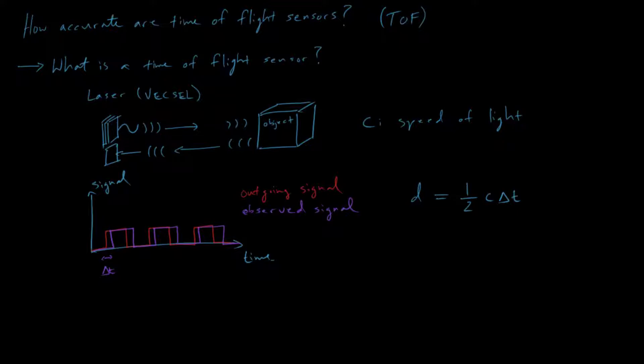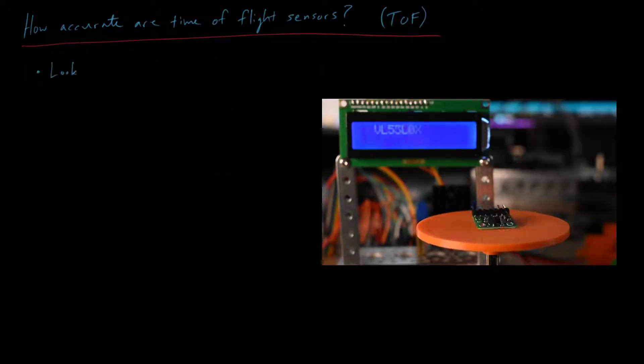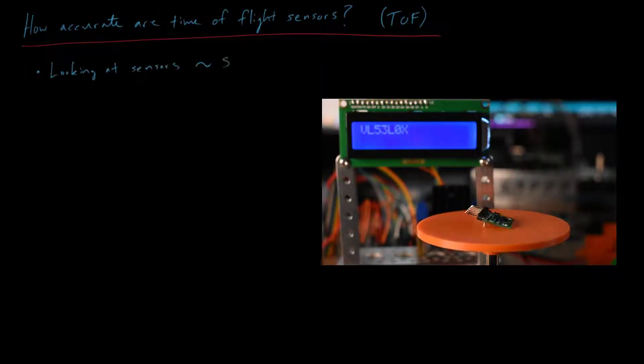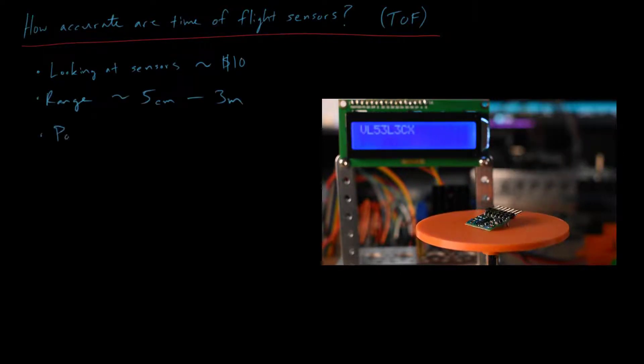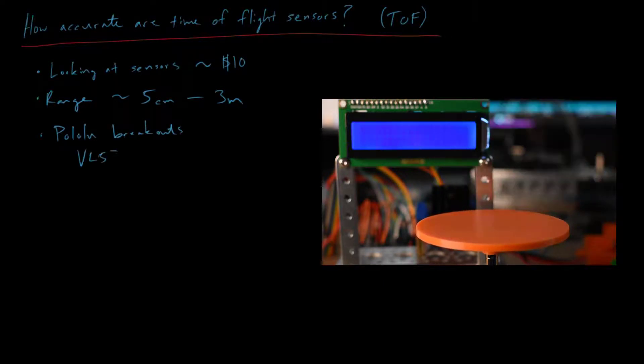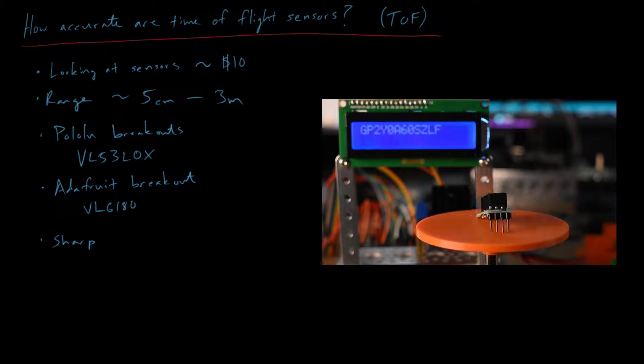So I want to get back to this question of how accurate are these time-of-flight sensors? So I'm going to be looking at these inexpensive breakout boards. They're around $10. And typically, these have a range of between 5 centimeters and 3 meters. I want to look at some Pololu breakouts, like this VL53L0X. There's a sharp sensor. This is, I think, an older sensor. And I'm also going to compare that to some ultrasonic ranging. And there are links to the specific modules that we used in the description.